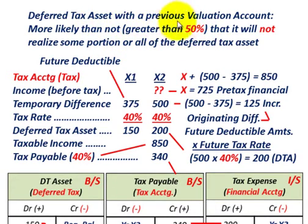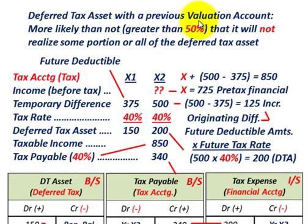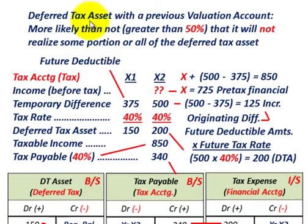So that's what we're going to be looking at. We're going to have this valuation account here. We're going to start out with a beginning balance and then we're going to have to adjust this valuation account depending on what we're going to realize in this deferred tax asset.